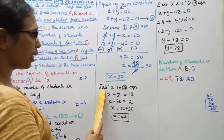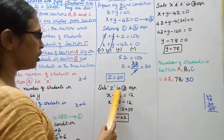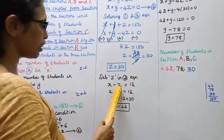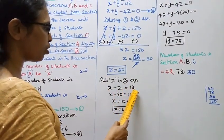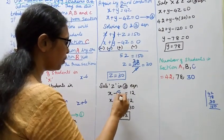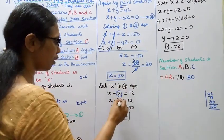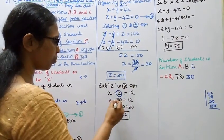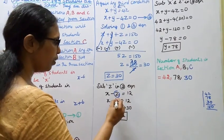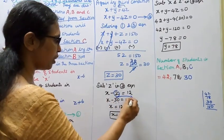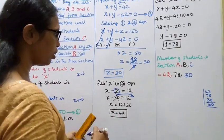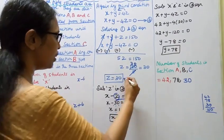Now substituting z equals 30 into the second equation, x minus z equals 12: x minus 30 equals 12, so x equals 12 plus 30, giving x equals 42.